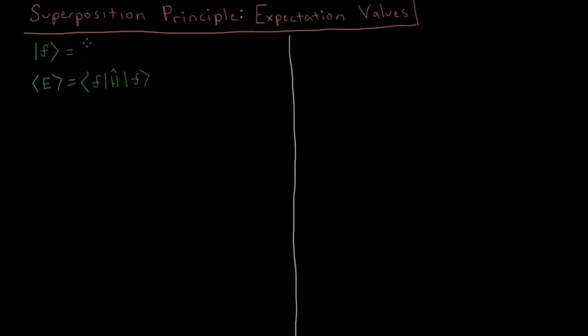And as we said, that this f function is a sum from n equals 1 to infinity of cn eigenfunction n. So let's substitute in this expression here into our energy expression.